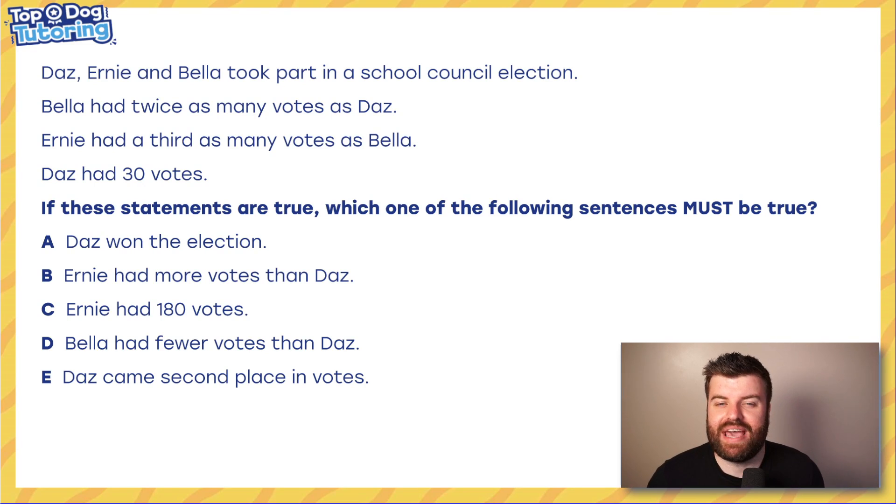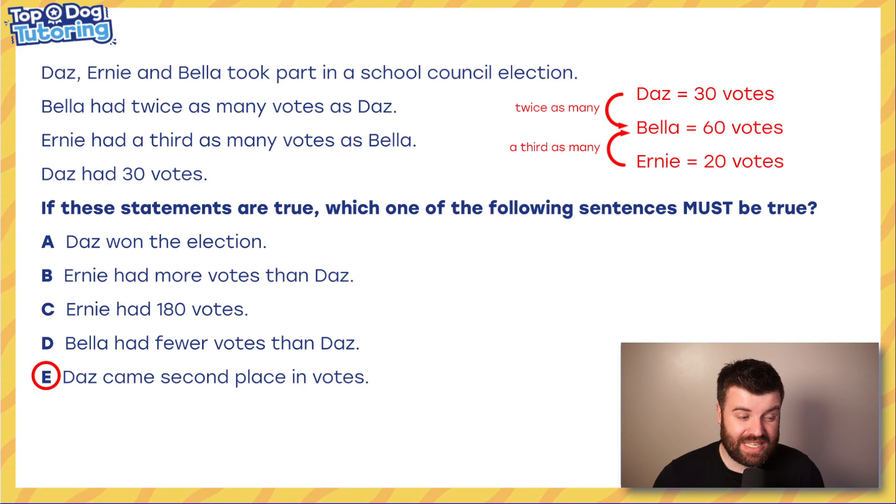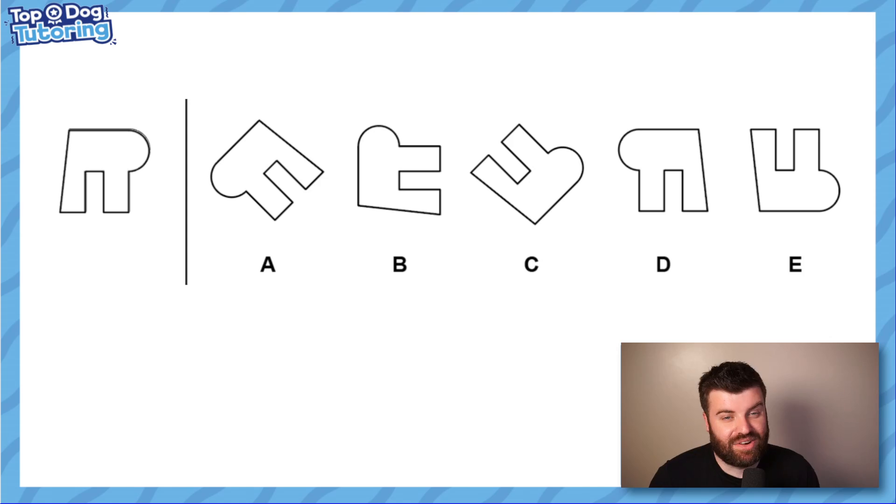Anyway, yesterday with Hayden, you took a look at riddles. This is the one that he left you with, and here is the answer that you might have put down in the comments. Check to see if you've got it right. The answer was E. Daz came in second place. This one is what must be true, and you can see the logic up here. Twice as many votes for Bella than Daz and a third as many for Ernie than Bella. E was the correct answer.